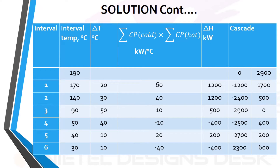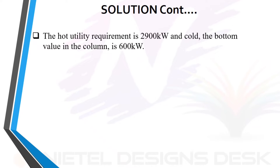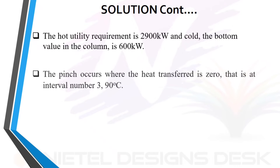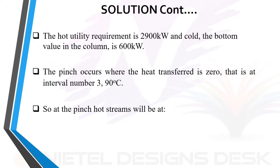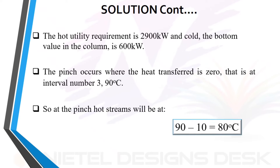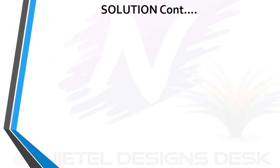In the last column, 2900 kilowatts of heat has been added to eliminate the negative values in the previous column. So the hot utility requirement is 2900 kilowatts, and the cold utility — the bottom value in the column — is 600 kilowatts. The pinch occurs where the heat transferred is zero, that is at interval number three, 90 degrees Celsius. At the pinch, hot streams will be at 80 degrees Celsius. To design the network for maximum energy recovery, start at the pinch and match streams following the rules on stream heat capacities for matches adjacent to the pinch.